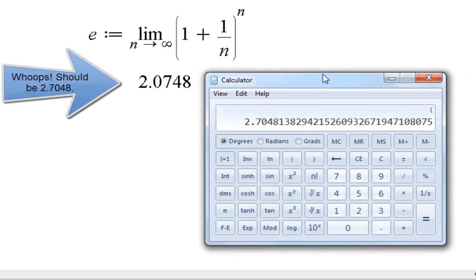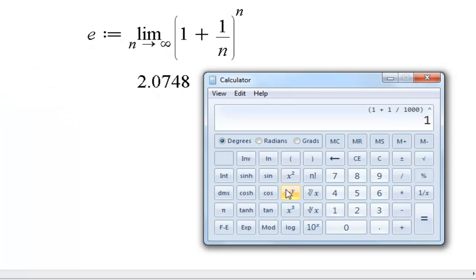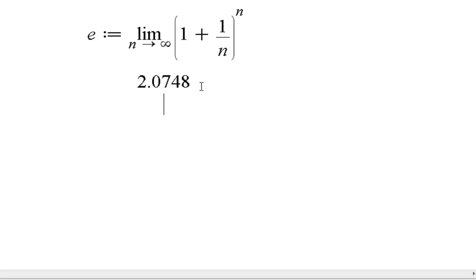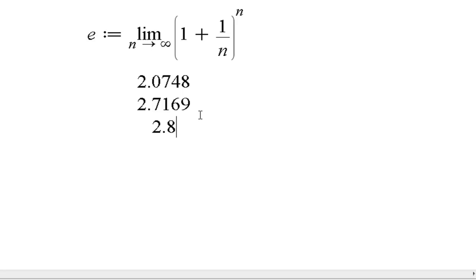I'm going to go ahead and write that down here. 2.0748. Okay, now if I use 1,000, I do 1 plus 1 divided by 1,000 to the power of 1,000. So I'm plugging in n equals 1,000 here. I get 2.7169 about. So I get about 2.7169. What happens if we go up to 10,000? I get 2.7181. I get 2.7181. And notice the numbers are still growing.